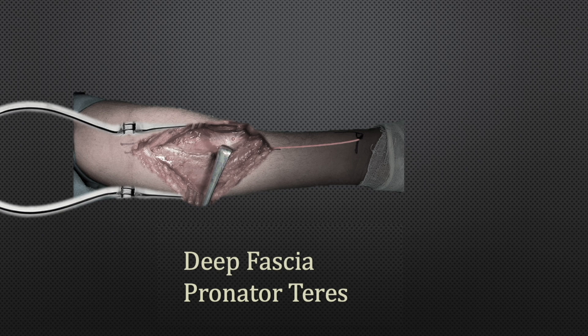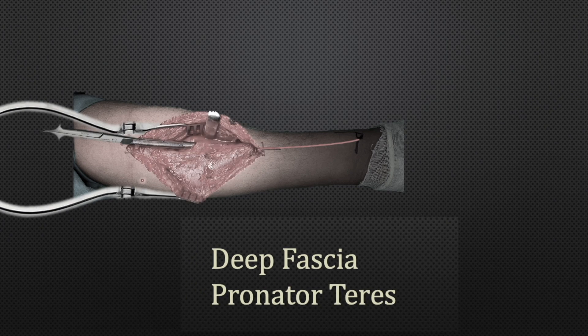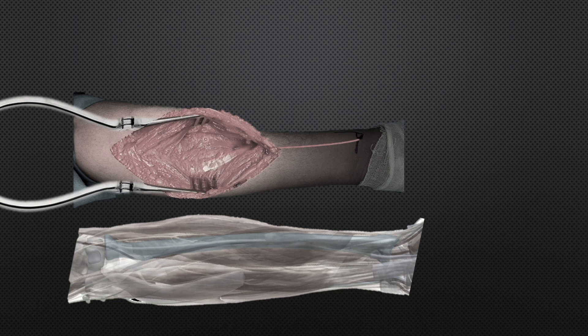Once you clean this area, you will be able to see the tendinous part of the muscle shining here — this is nothing but the pronator teres insertion. The pronator teres inserts in the middle third of the radius. Make a small nick in this region, then gently cut the deep fascia while protecting the radial artery, and you will be able to see the pronator teres clearly.